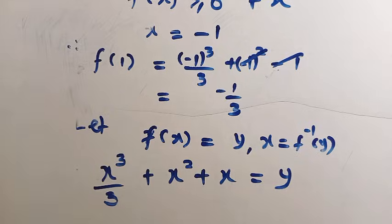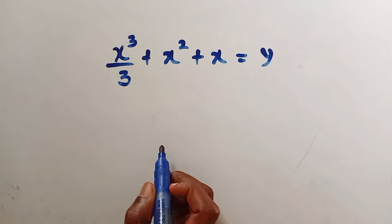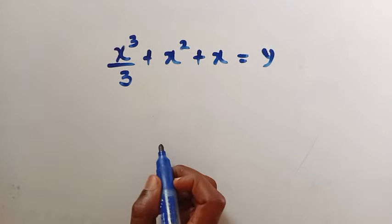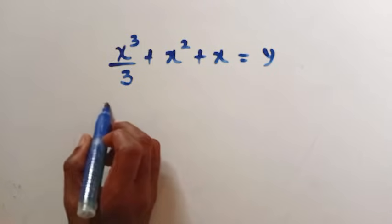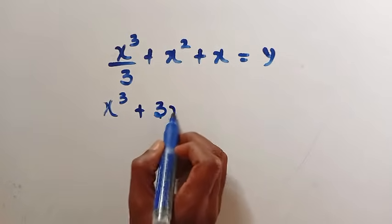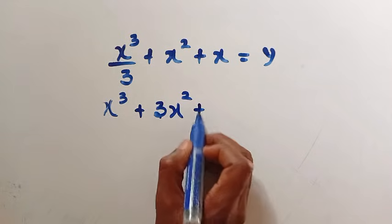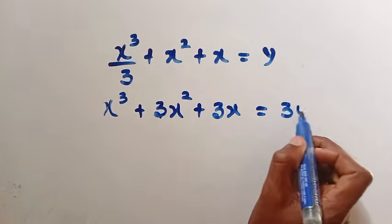Then the next step, looking at this, let's try and multiply through by 3. Multiplying through by 3, we have this 3 cancelled 3, and here we have x cubed plus 3x squared plus 3x equals 3y.